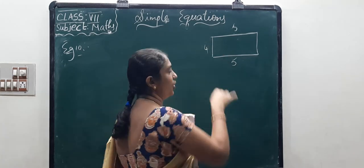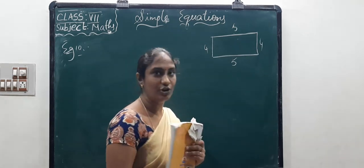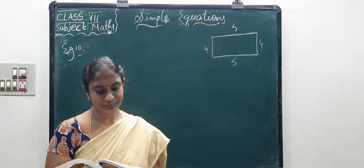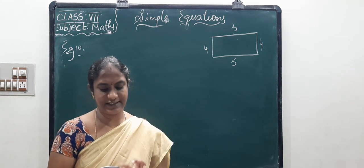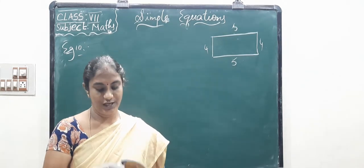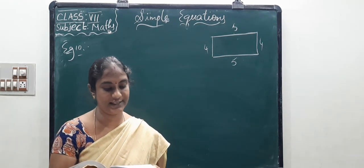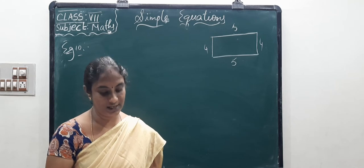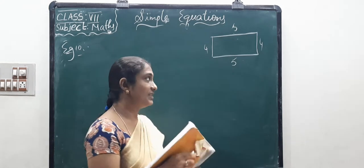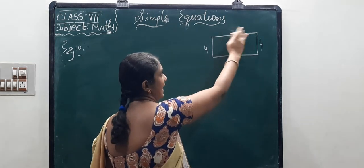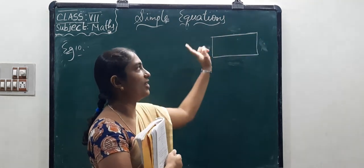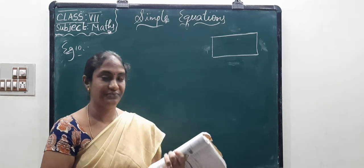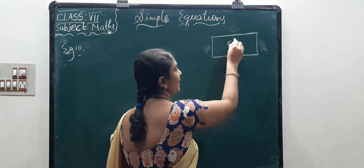If the perimeter of the rectangle is 56 meters, find its length and breadth. Here they haven't given the length value or the breadth value, but they give the total perimeter as 56 meters.